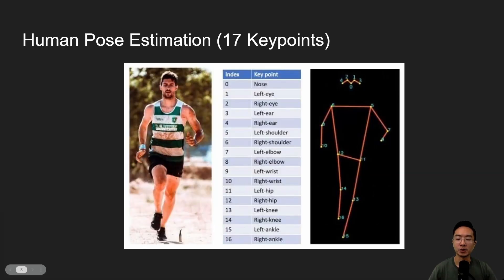So human pose estimation, you can see here there's different key points. I'm going to go through three types that's available right now. Here is the 17 key points one. So you have the nose, left eye, right eye, left ear, right ear, left shoulder, right shoulder, left elbow, right elbow, left wrist, right wrist, the left right hip, left right knee, and the left right ankles. So you can see these are the main key points for the 17 key point estimation.